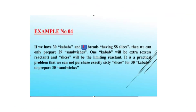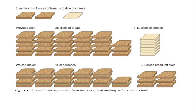Kitchen ki ek example: agar aap sandwich banana chahte hain aur aapke paas 58 bread slices aur 30 kabab hain, toh aap sirf 29 sandwiches bana sakte hain kyunki slices khatam ho gayi. Diagram se samjhein: ek sandwich ke liye 2 bread aur 1 cheese slice chahiye. Aapke paas 28 bread slices aur 11 cheese slices hain toh aap sirf 11 sandwiches bana sakte hain. 6 bread slices peeche bach gayi hain, isliye cheese yahan limiting reactant hai.